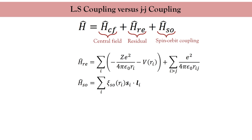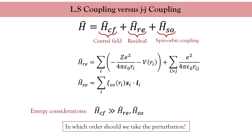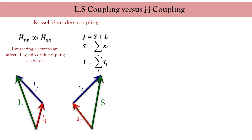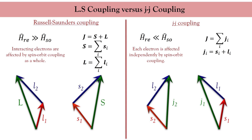To solve this Hamiltonian we need to make some approximations. It is clear that the central field Hamiltonian dominates over the residual and spin-orbit contributions, but we must choose the next step. If the residual part dominates over the spin-orbit coupling, the electron-electron interaction is very strong, and the electrons can be considered as a whole defined by their total orbital momentum L and total spin momentum S. Then the spin-orbit coupling couples those two quantities — this is called the Russell-Saunders coupling scheme. On the other hand, if the atom is very heavy, the spin-orbit coupling dominates over the residual part, and every single electron is defined by its total angular momentum — this is called the JJ coupling scheme.